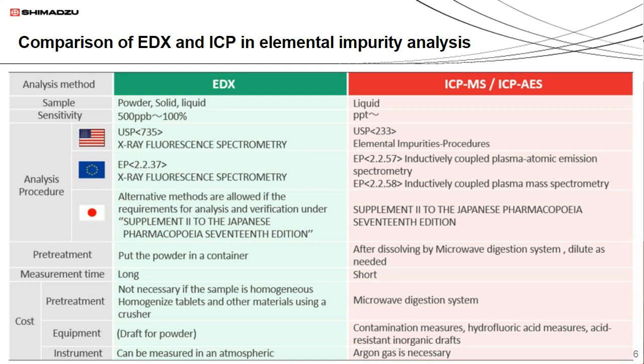A common critique of EDX is that it's not sensitive enough for pharmaceutical elemental impurity analysis, because detection limits are in the part per million range whereas ICP-MS is in the part per trillion range. However, these are the intrinsic sensitivities of the instruments and do not take into account the method detection limits. In ICP-MS, if you want to measure a powder or even a viscous liquid, you oftentimes have to digest it followed by diluting — and the dilution factor can be anywhere between 10 to 500. With those extra steps involved, the ICP-MS method detection limit often increases to the point where it is on par with the EDX method detection limit.